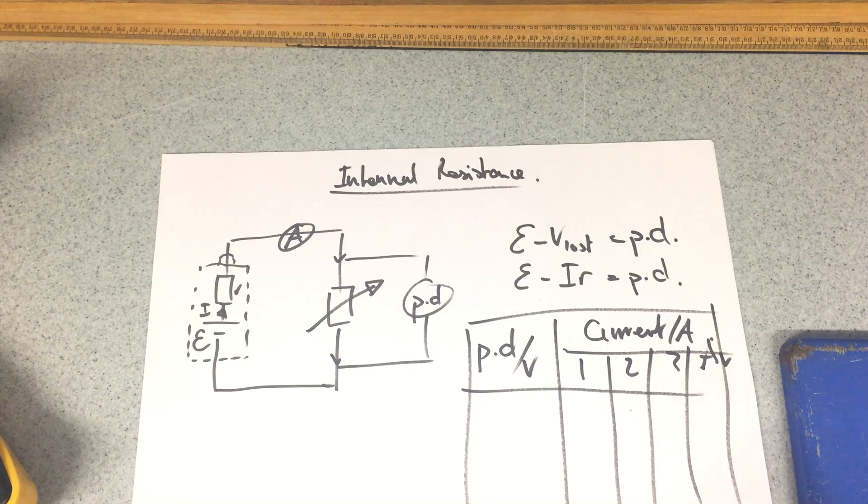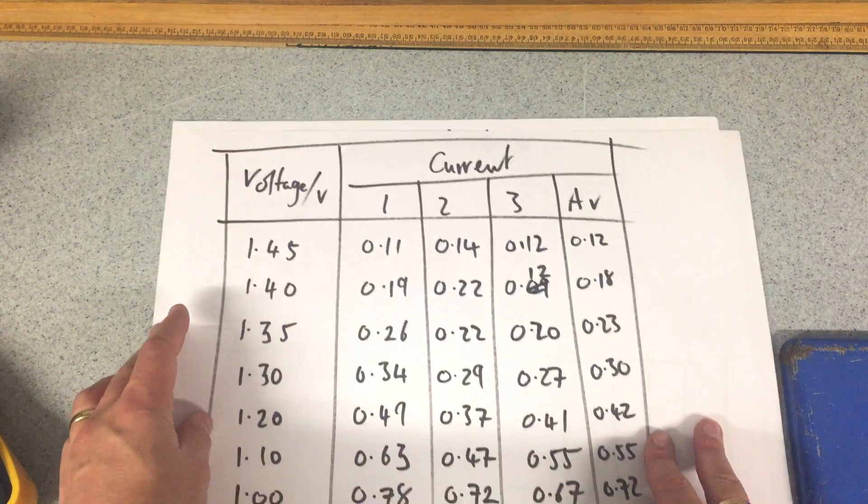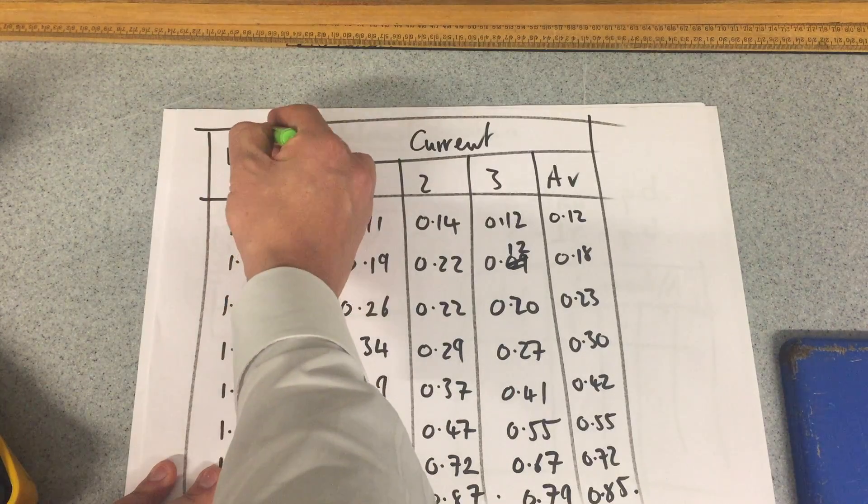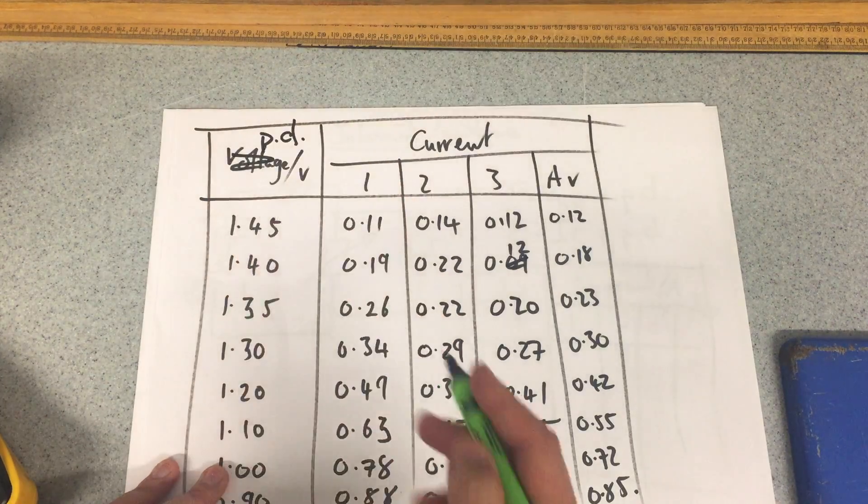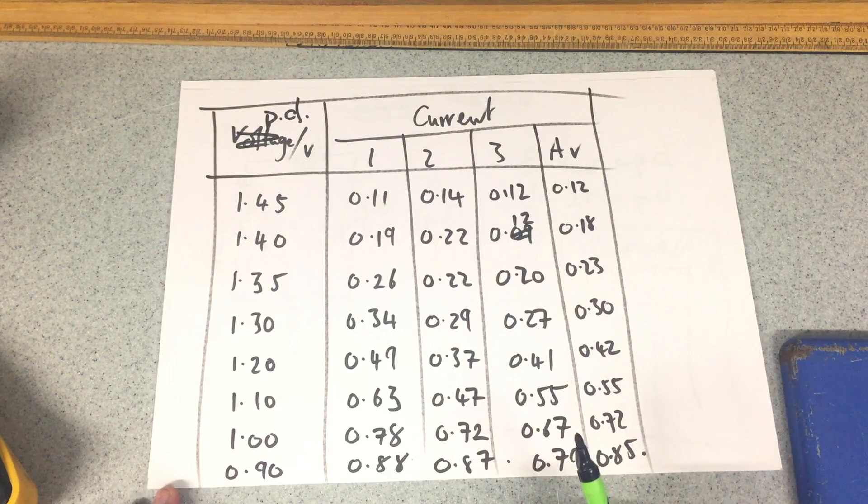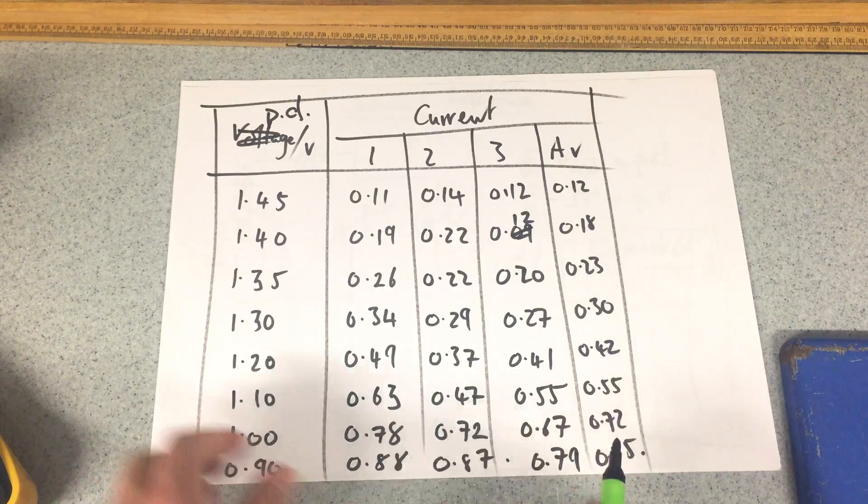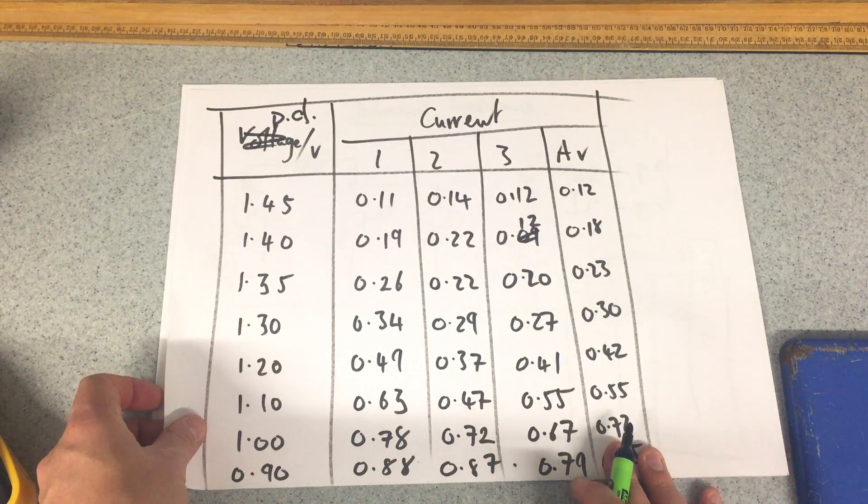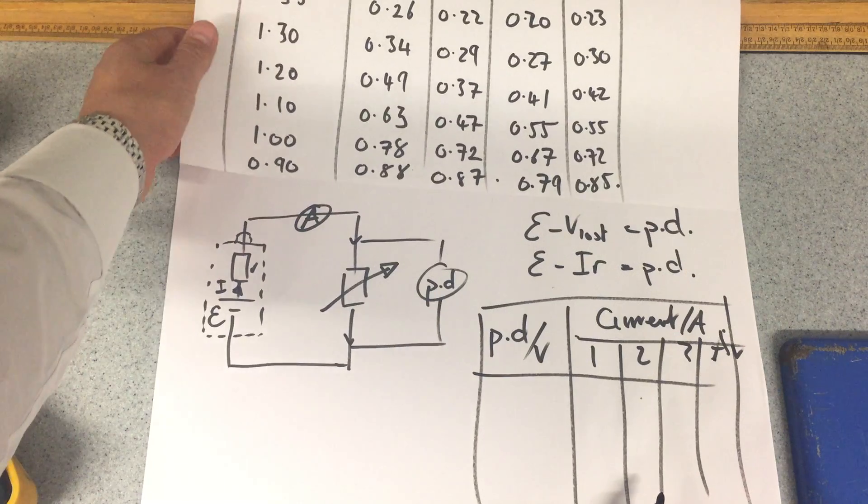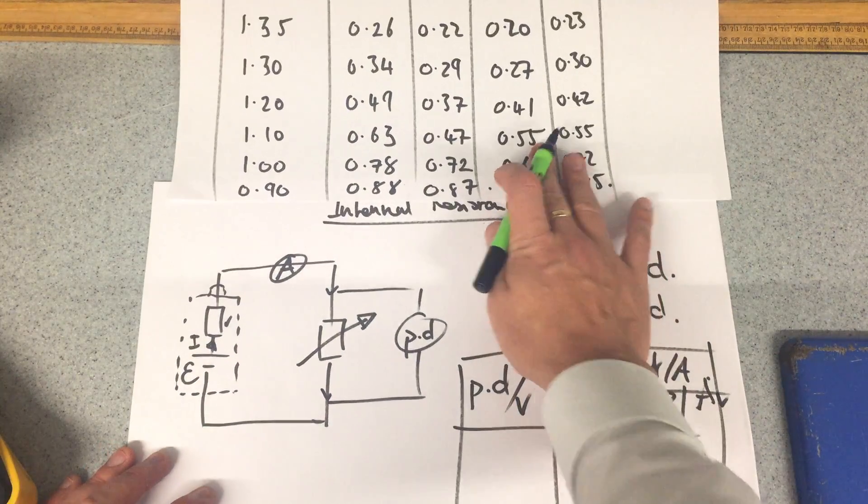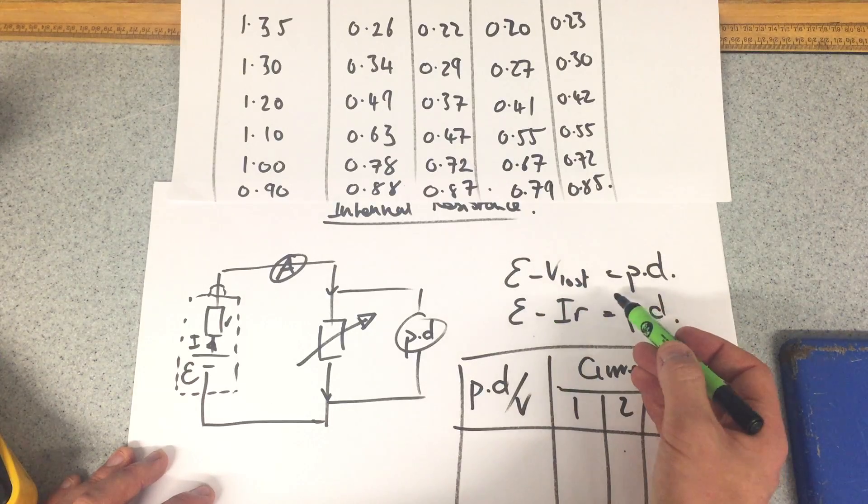Good. So with that in mind, let's take a look at the results. Here are the results. I should really say here, maybe I should write PD, because that's what's coming out versus my current. So there are some results, and you can press pause and copy those down. Let's just talk about what we're going to do with those results.